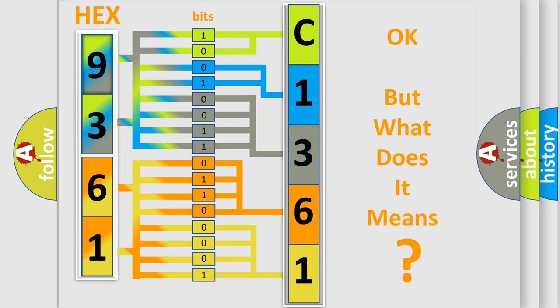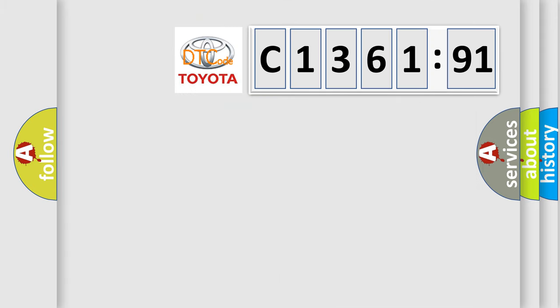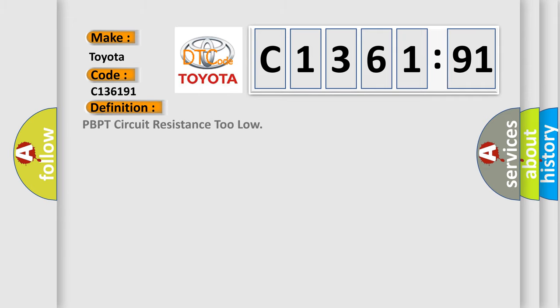The number itself does not make sense to us if we cannot assign information about what it actually expresses. So, what does the diagnostic trouble code C136191 interpret specifically for Toyota car manufacturers? The basic definition is: PBPT circuit resistance too low.